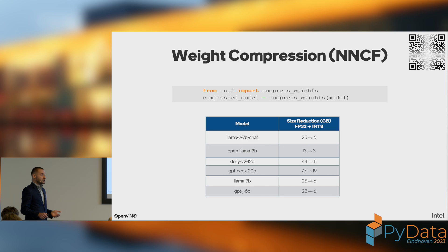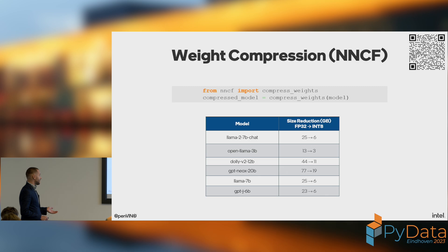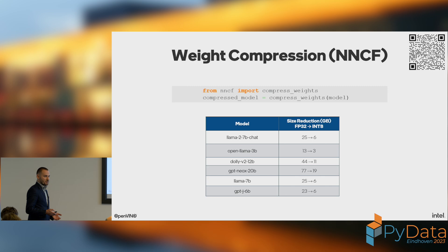For large language models, weight compression makes a big difference: LLaMA 7B chat goes from 25 GB to 6 GB, Dolly from 44 to 11 GB, and GPT-J 6B from 23 to 6 GB — roughly four times less space because we change four bytes of FP32 to one byte of INT8.